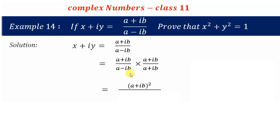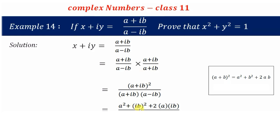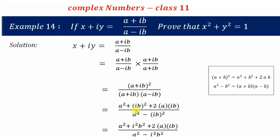In the numerator, (a + ib) × (a + ib) gives (a + ib)². We expand this using the identity: (a + ib)² = a² + (ib)² + 2·a·ib. In the denominator, (a - ib)(a + ib) = a² - (ib)², which expands to a² - i²b².